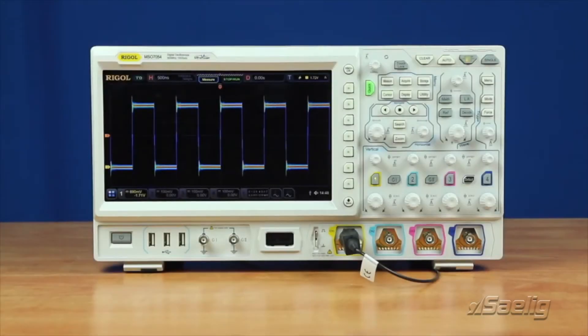Zone trigger works in conjunction with a traditional trigger type such as edge, slope, I2C, pulse, or any other 21 trigger types. Zone trigger looks at all the captures from the original trigger type and displays only the ones that meet the active zone criteria.